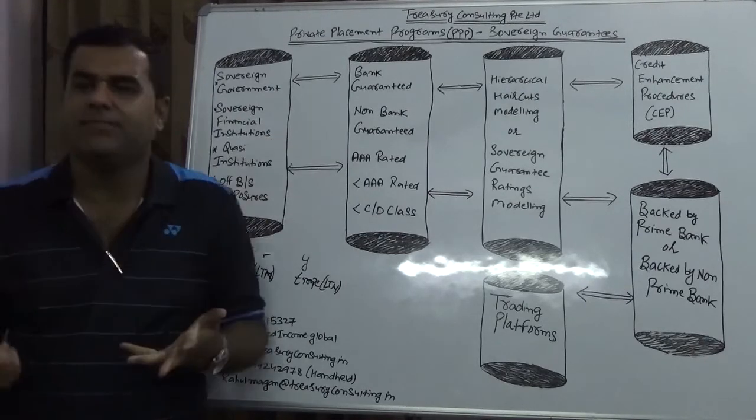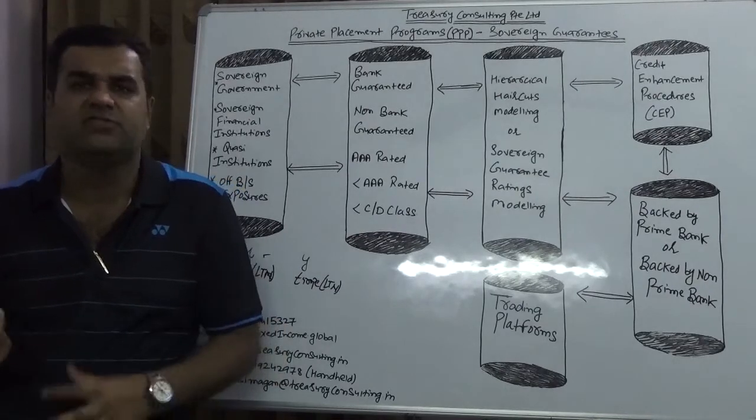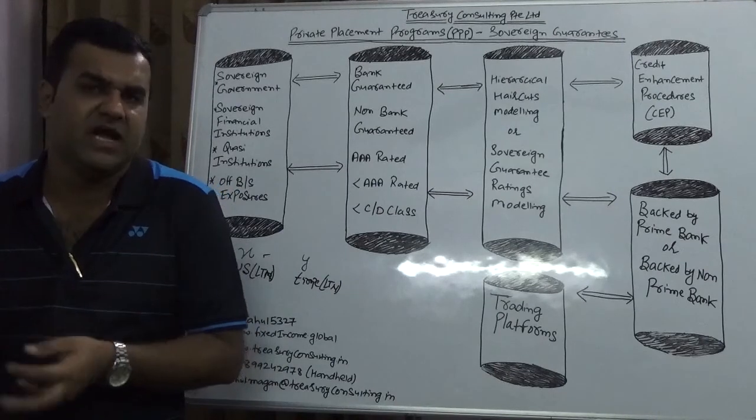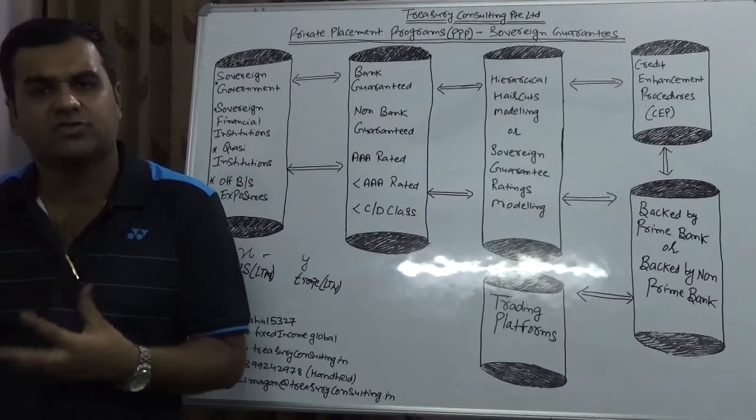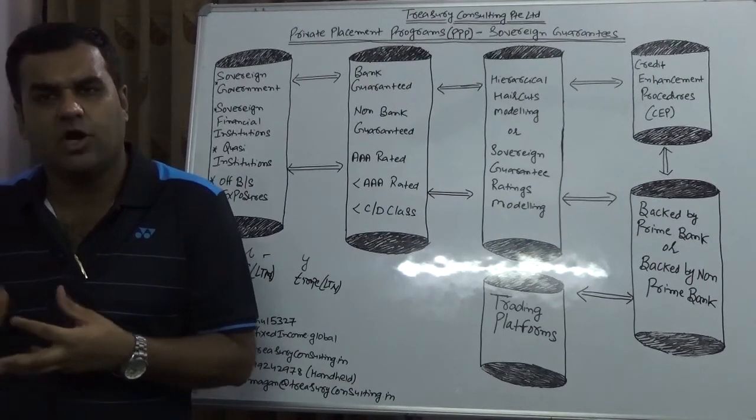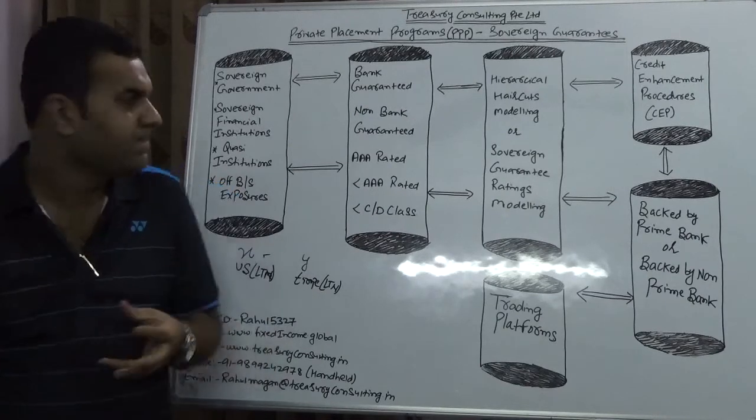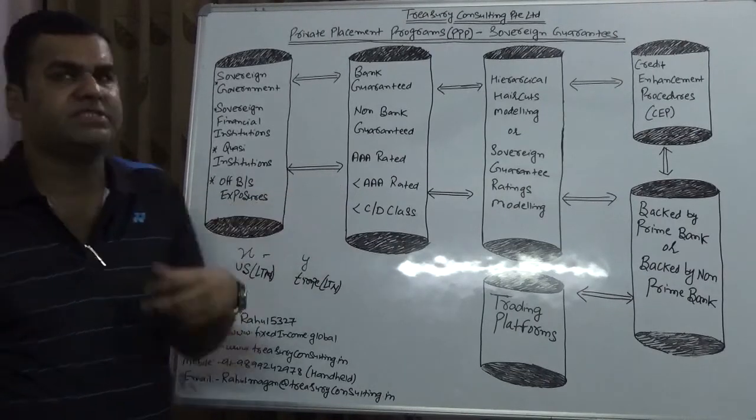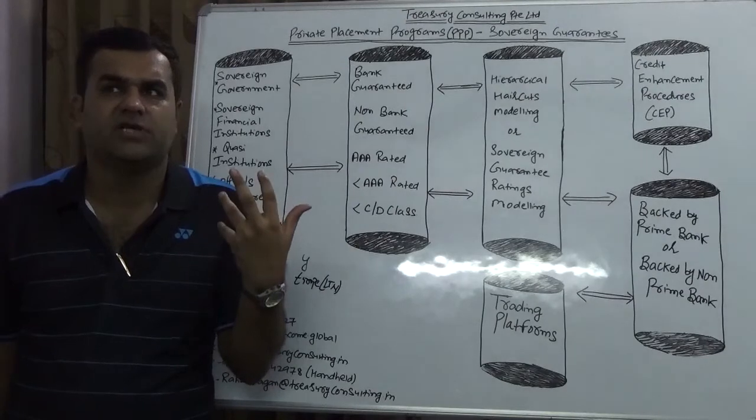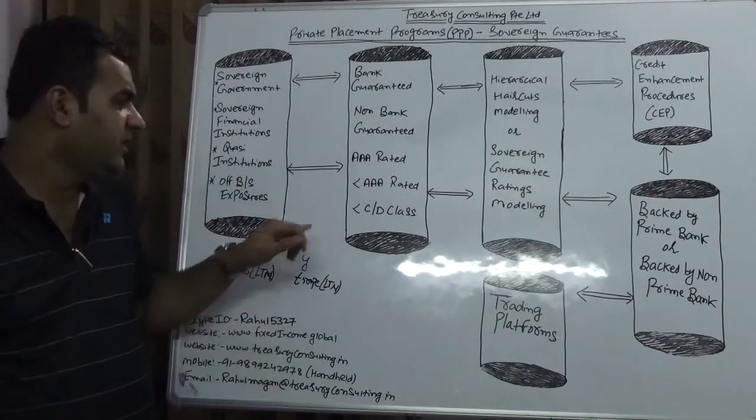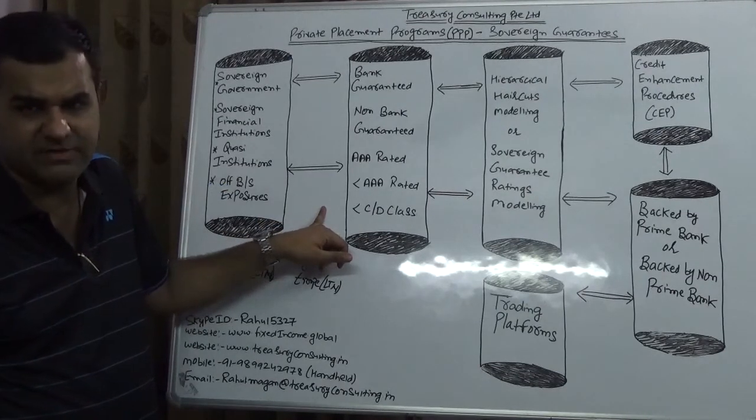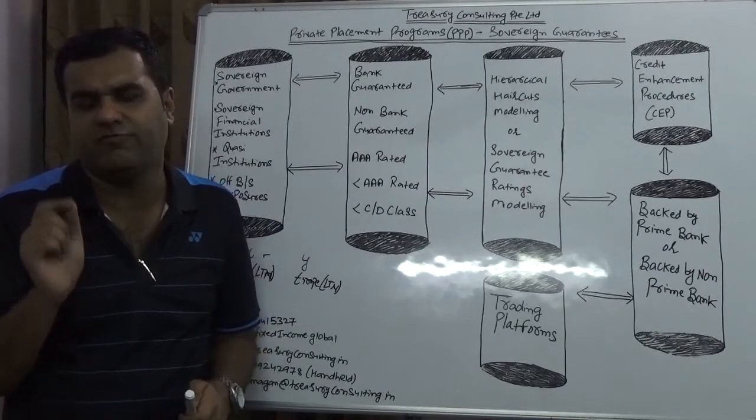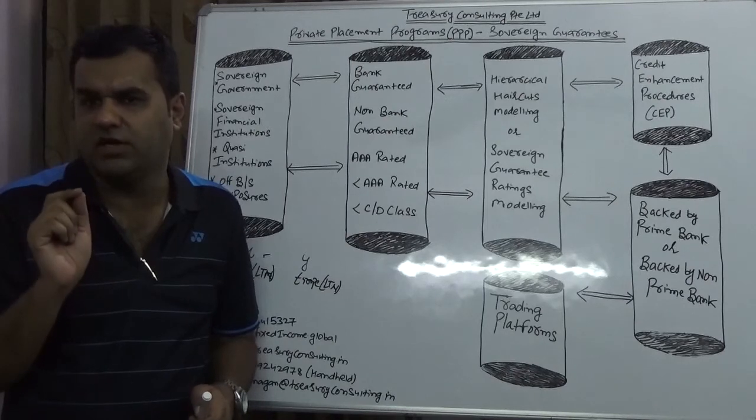It's not only a financial institution, but it's also being backed by government of Singapore. Then you have non-bank guarantees. Example, let's talk about India, you have Life Insurance Corporation, UTI, Unit Trust of India. We shortly refer this as DII, domestic institutional investors. Then you have AAA rated which is United States. Then you have less AAA rated which is like China, like Tokyo. Then you have C and D class, here comes to an extent India and respective countries. Rating plays a very important role in the trading of sovereign guarantee in PPP.